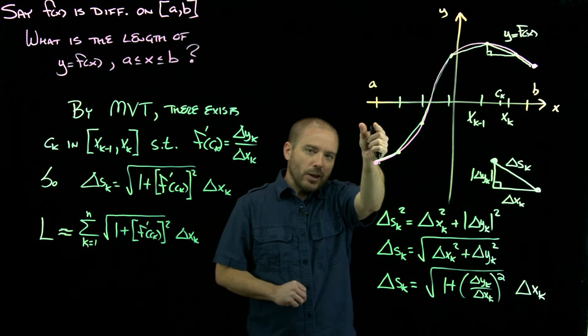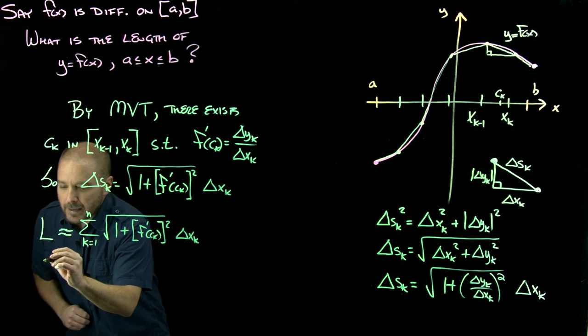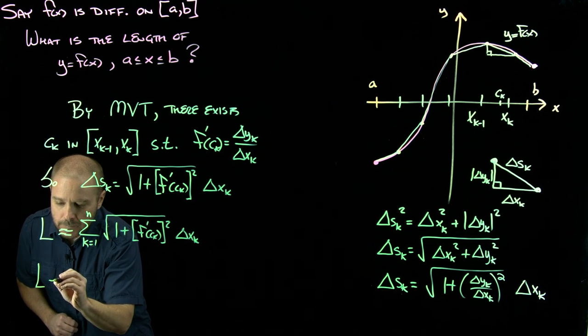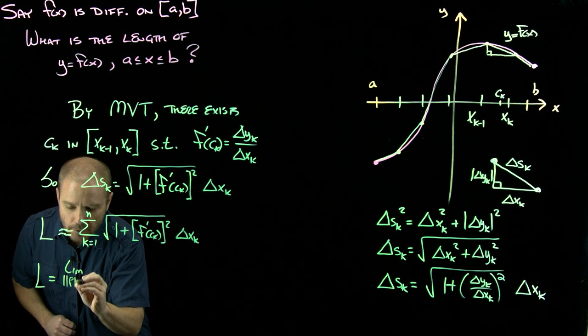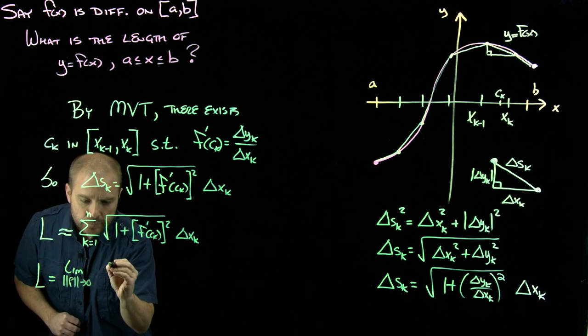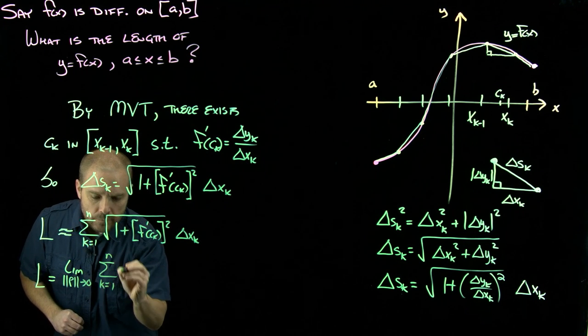Remember the way we said that was we let the norm of the partition go to zero. So the length will be exactly what you get when you let the norm of the partition go to zero of that expression.